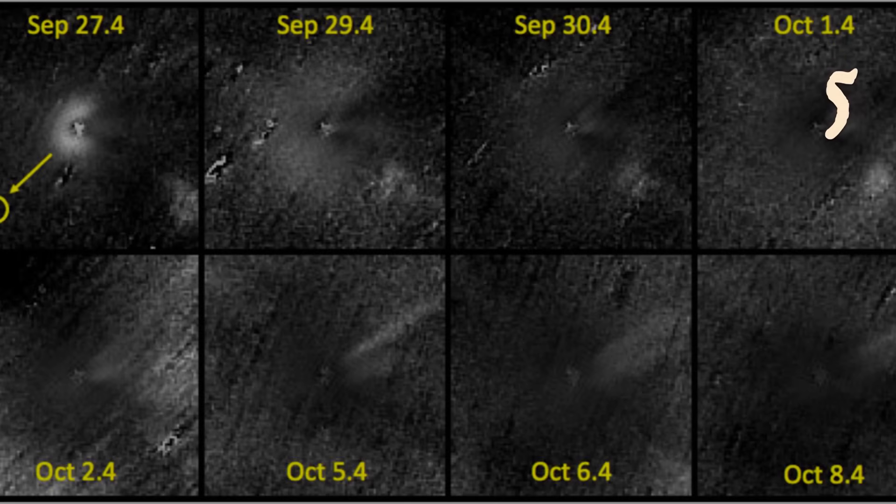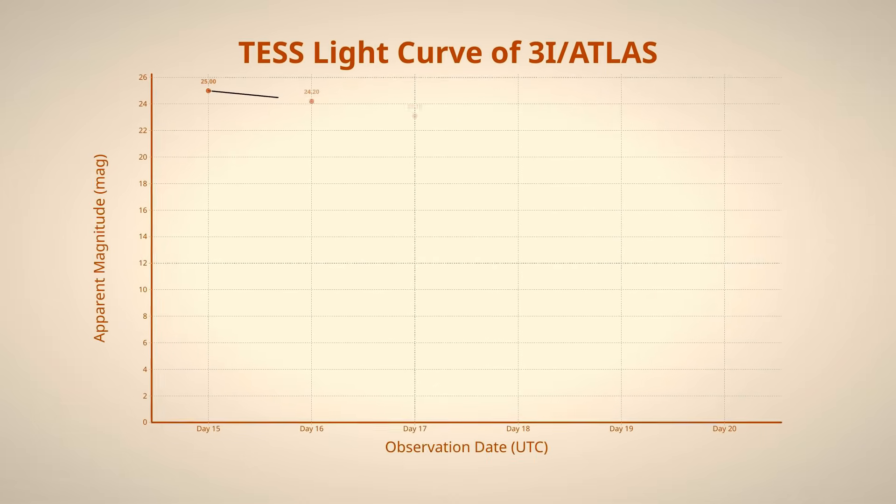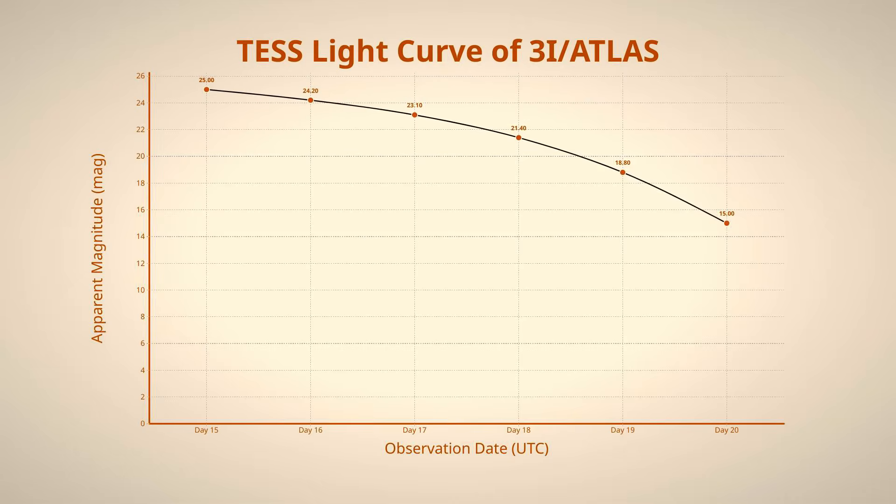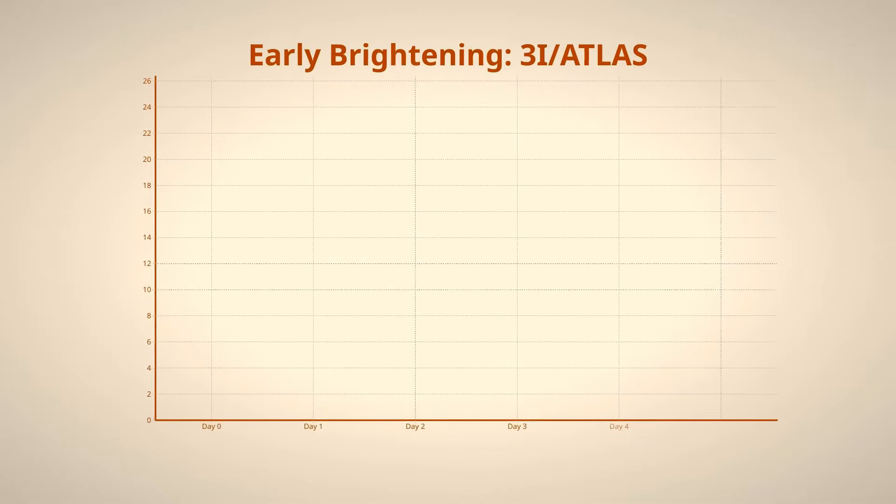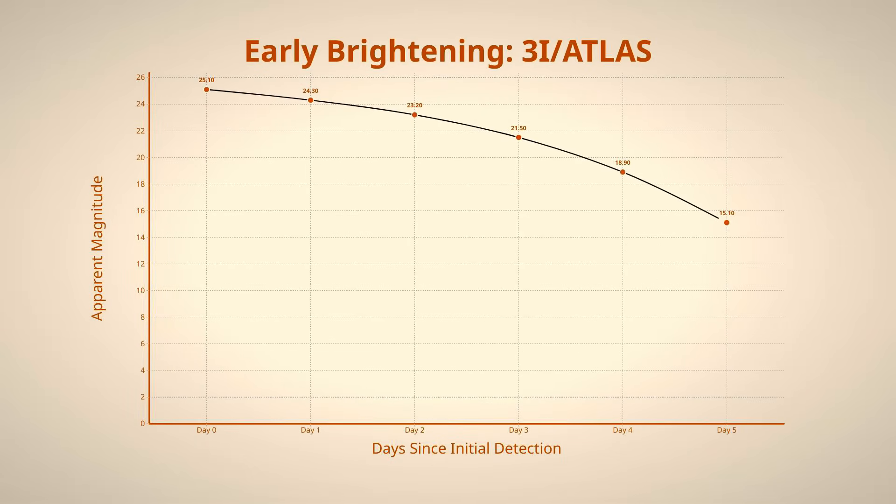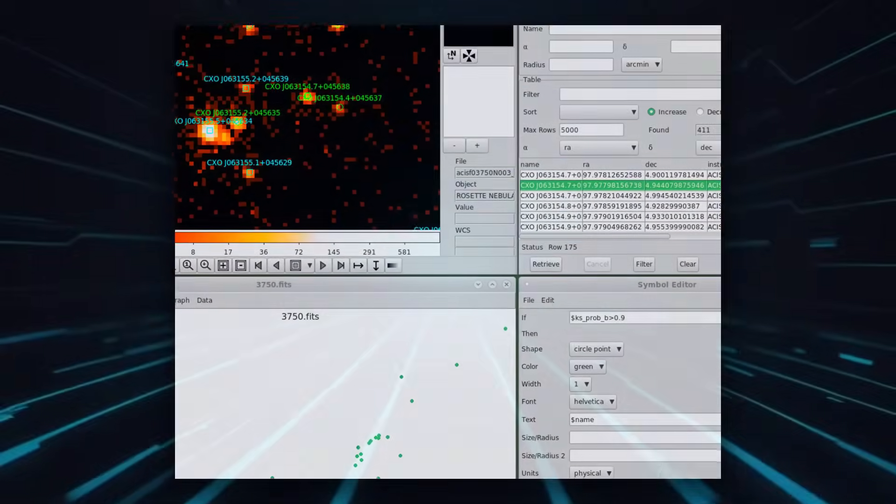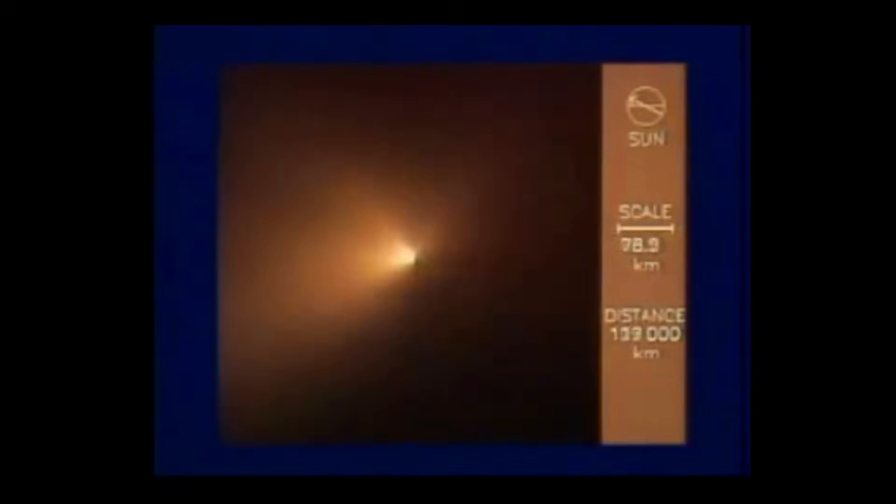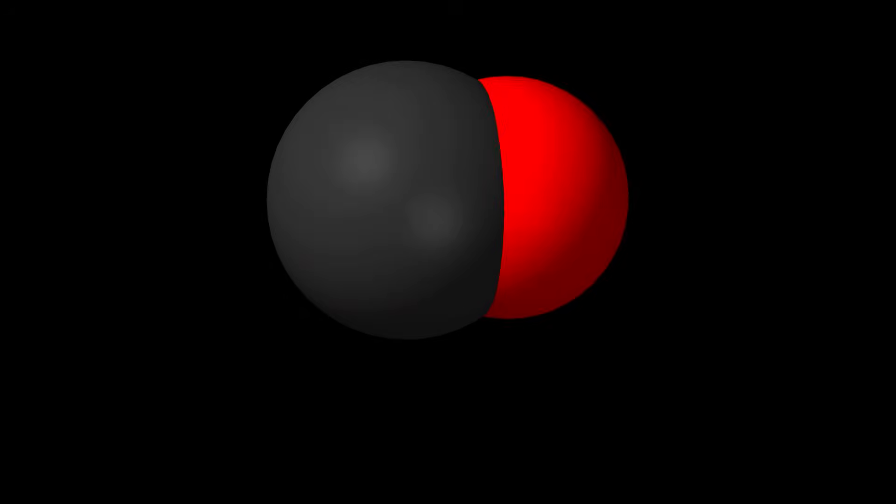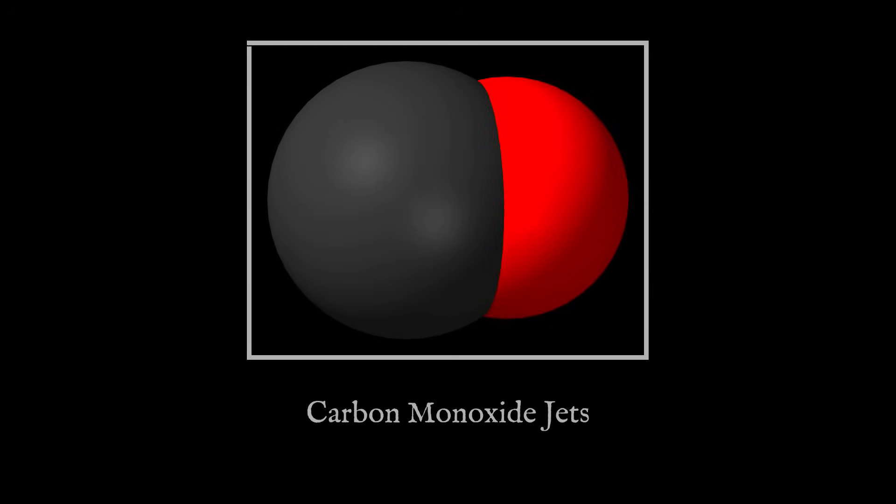Yet over just three weeks, its measured brightness jumped by a factor of five. The TESS light curve tells the story. A steady magnitude of about 20.8 suddenly races to 19.3, a change far steeper than the slow brightening expected as a comet draws closer to the Sun. Guo's team ran the numbers again and again, ruling out image artifacts and background confusion. The result held: no comet from our solar system shows this kind of activity at such a distance.